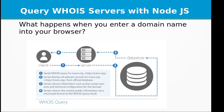Here is another diagram which shows how the client, server, and datastore interact. The client sends a WHOIS query for ICANN.org. The server fetches all relevant records for ICANN.org from the official database. The server then returns information such as the contact person and technical configuration for the domain, returned as the WHOIS query result in a structured format.